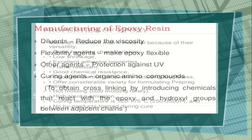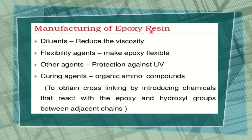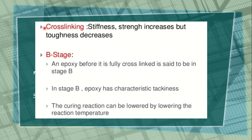In the manufacturing of epoxy resin: diluents reduce the viscosity; flexibility agents make epoxy flexible; other agents provide protection against UV; curing agents are organic amino compounds; and cross-linking is obtained by introducing chemicals that react with the epoxy and the hydroxyl groups between adjacent chains.